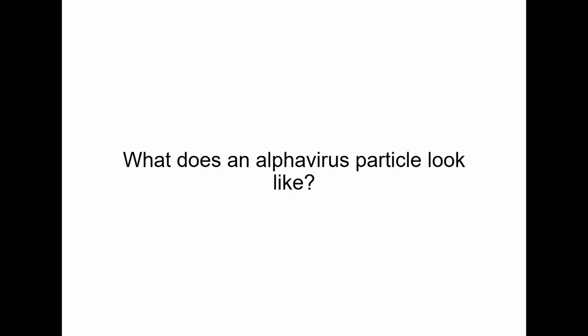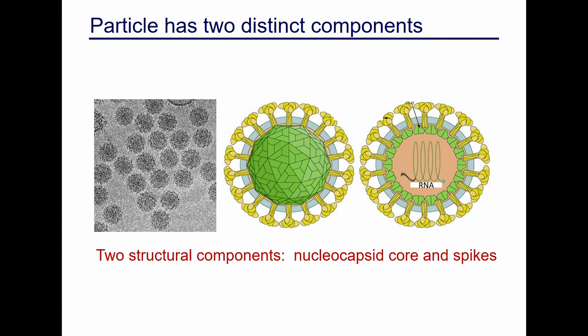Let's start with what an alphavirus particle looks like, because if we want to assemble a particle, we need to know what the final goal is. Here on your left are purified Ross River virus particles frozen in vitreous ice ready for cryo-EM reconstructions. In a schematic cross-section, you have a nucleocapsid core in the center, a lipid bilayer in gray, and glycoprotein spikes in yellow. The spikes are embedded in the lipid bilayer and connected to the core, with RNA inside, capsid in green, lipid in gray, and spikes in yellow.